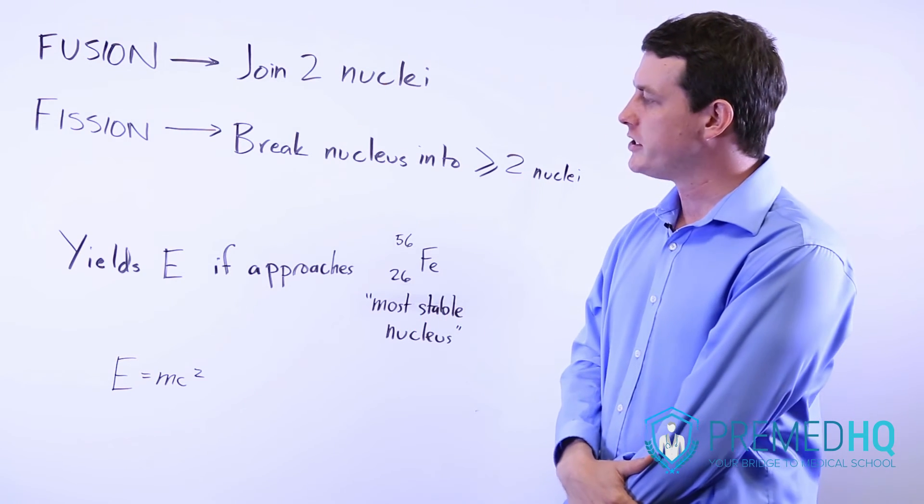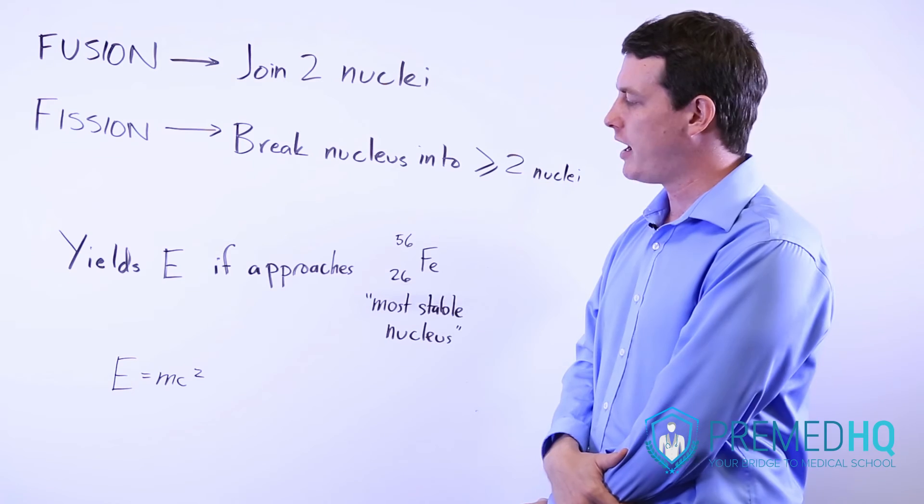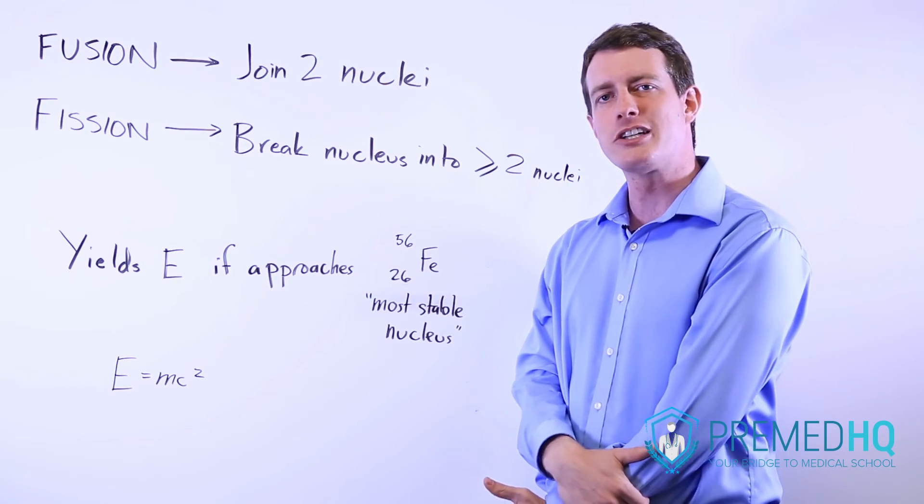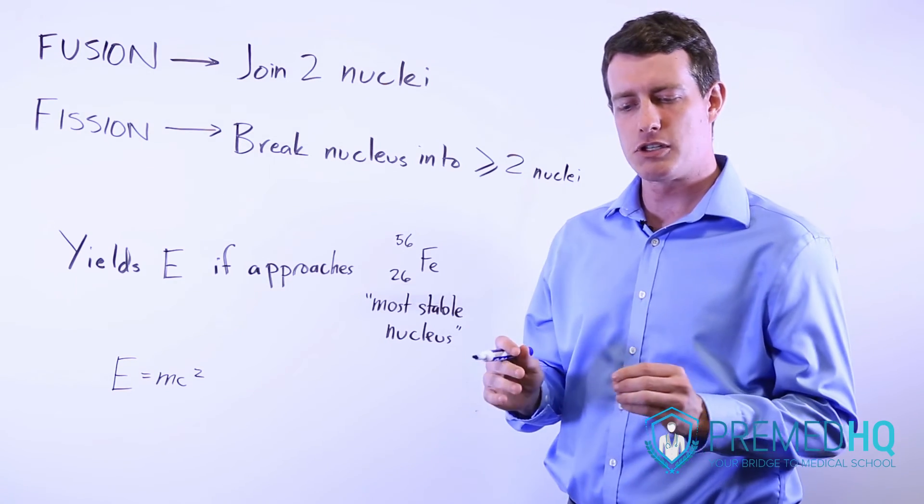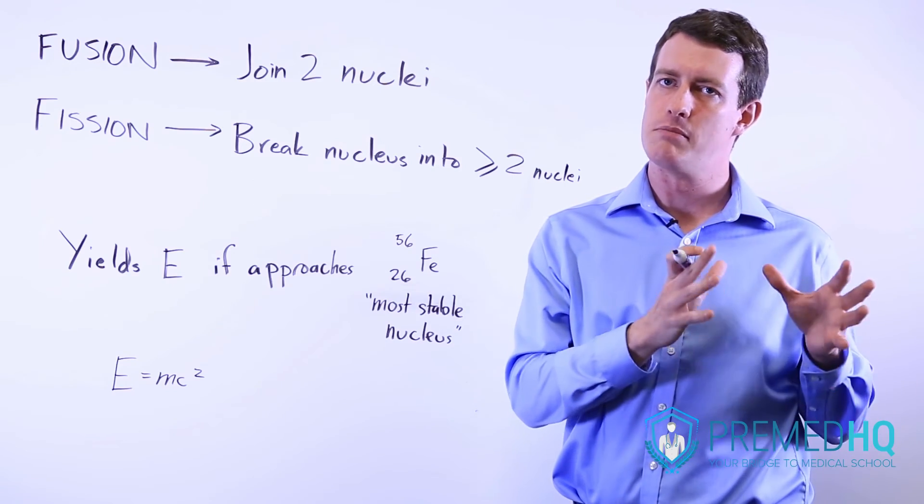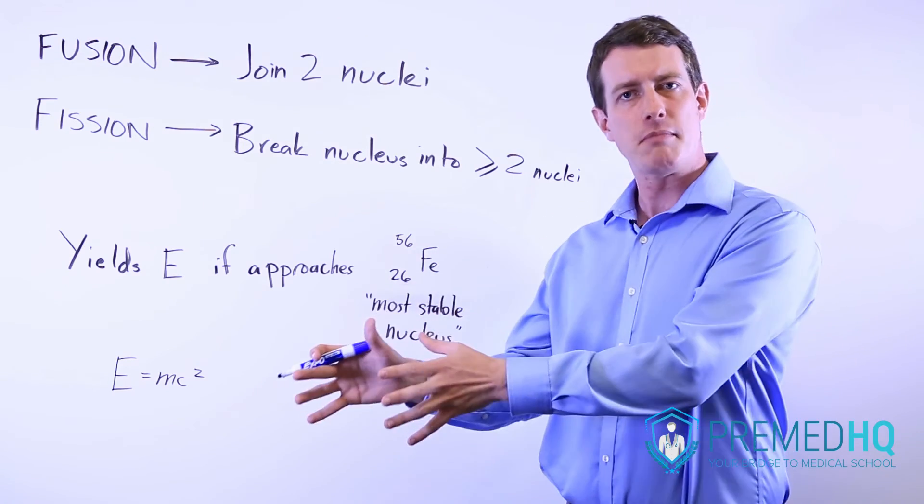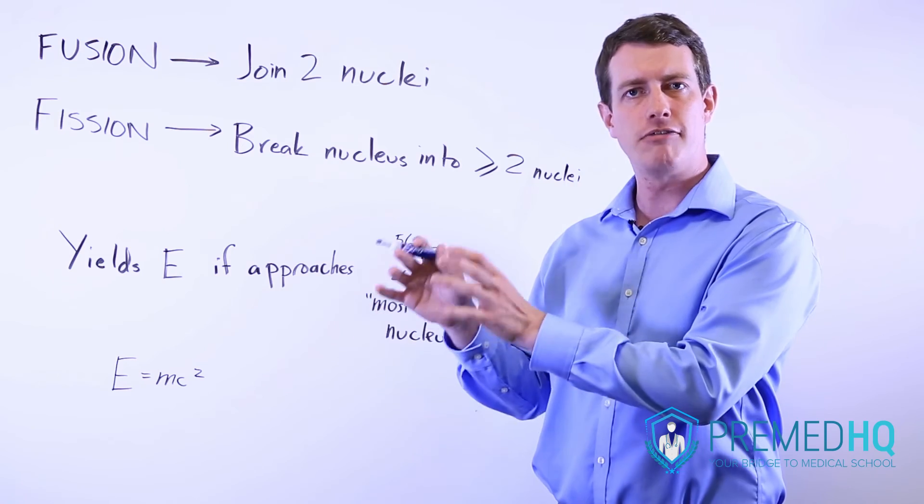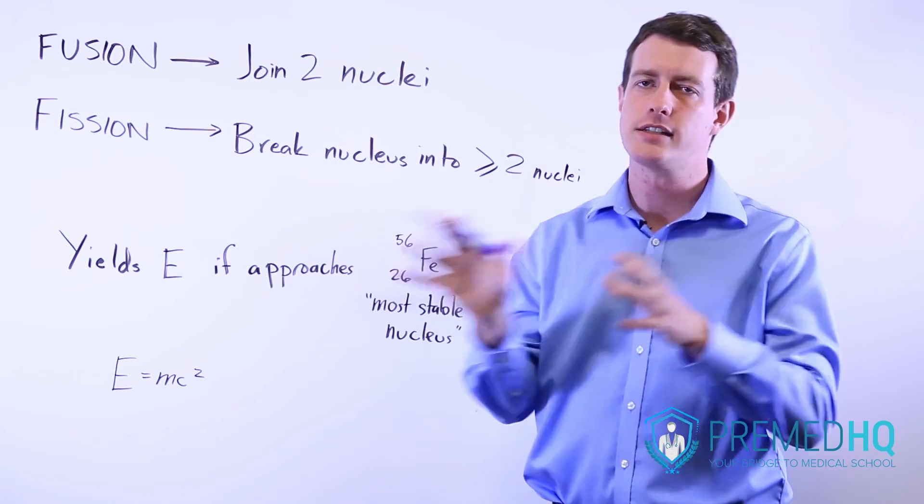The energy that is produced is measured by calculating the mass defect, which again is the difference between the sum of all the masses of the products and the sum of the masses of the reactants.